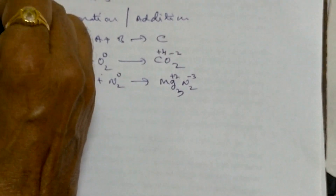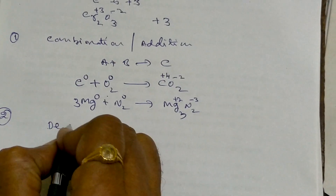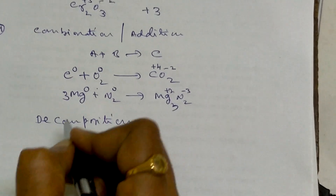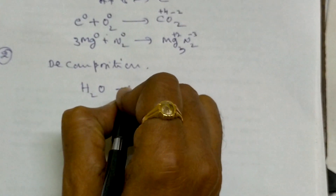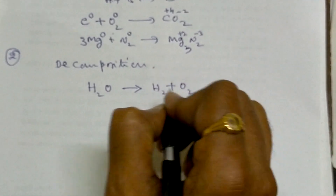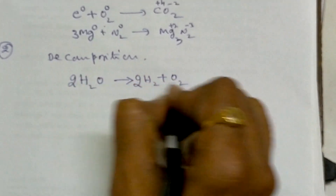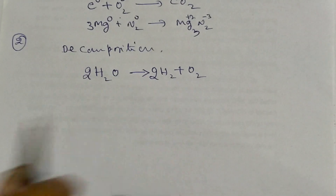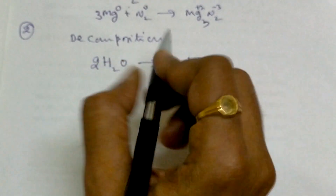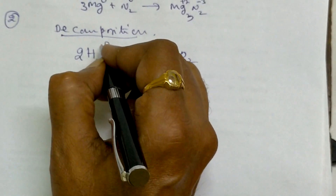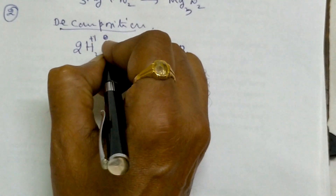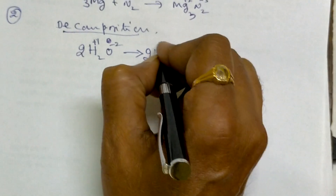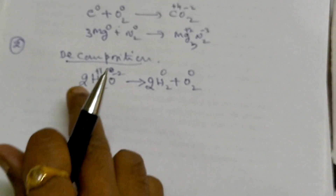The second type is decomposition reaction. If you read right to left it is combination; left to right it is decomposition. Classic example: 2H₂O gives 2H₂ plus O₂. In H₂O, hydrogen is plus 1 and oxygen is minus 2. In the products, H₂ is 0 and O₂ is 0. So this is a decomposition reaction and also a redox reaction.